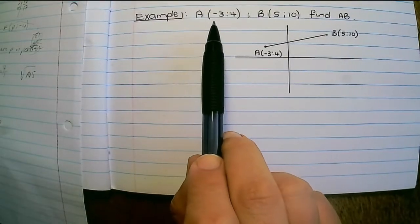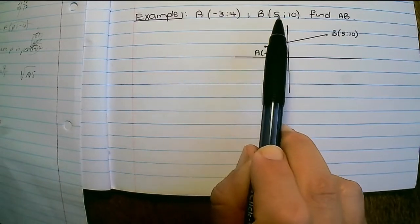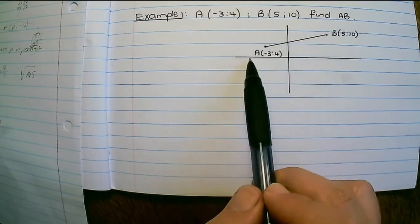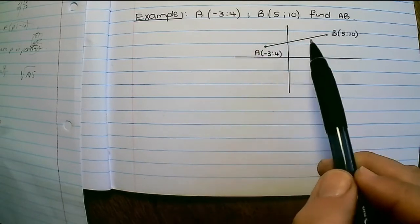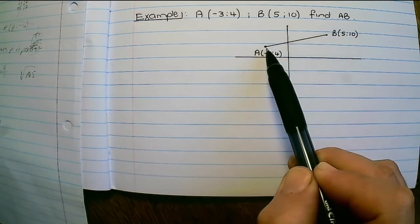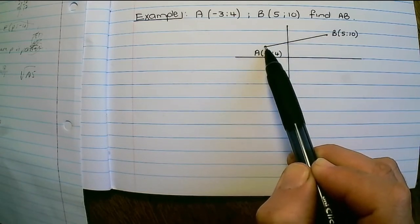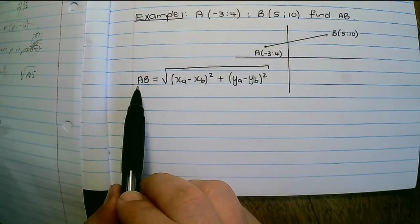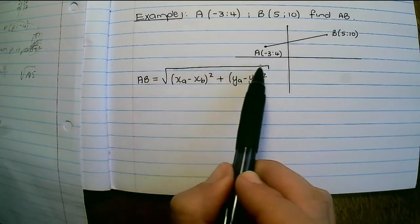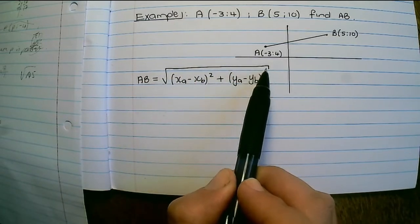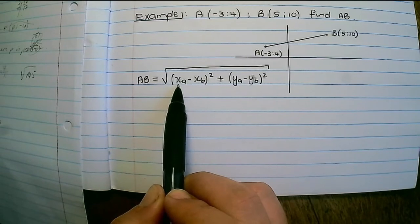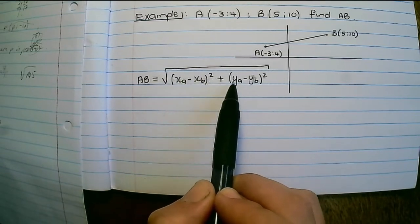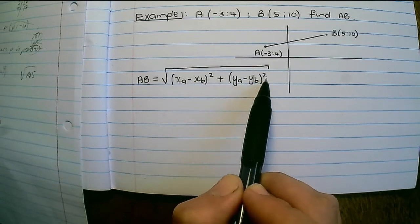In this example we are given two coordinates A and B and we want to find the length of AB. It's not necessary to see it on the Cartesian plane, but this is just to illustrate that we're trying to find the distance from point A to point B. The distance formula is the square root of (x_A minus x_B) squared plus (y_A minus y_B) squared.